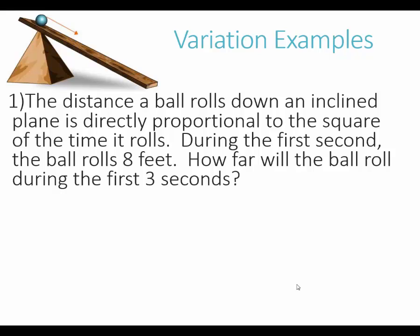We're going to be looking at some examples of variation problems. We're going to go through the entire process of defining our variables, modeling the situation, and solving the question. For our first example, we see the distance a ball rolls down an inclined plane is directly proportional to the square of the time it rolls.